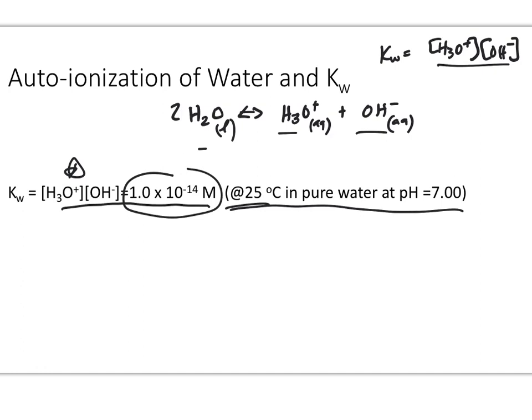At 25°C, the concentrations of H3O+ and OH− should be equal. However, if we adjust the concentration somehow, there's going to be a change in the other ion present. This equation can be utilized to help guide us in practice problems as well as various different types of temperature problems.